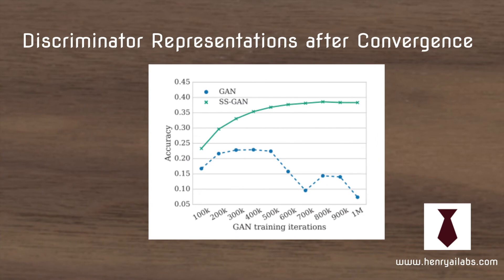With GANs, one of the big problems is that once the generator is successfully fooling the discriminator, there's no reason for the discriminator to have useful representations at all. But with this self-supervised additional task, the discriminator still has something to do.